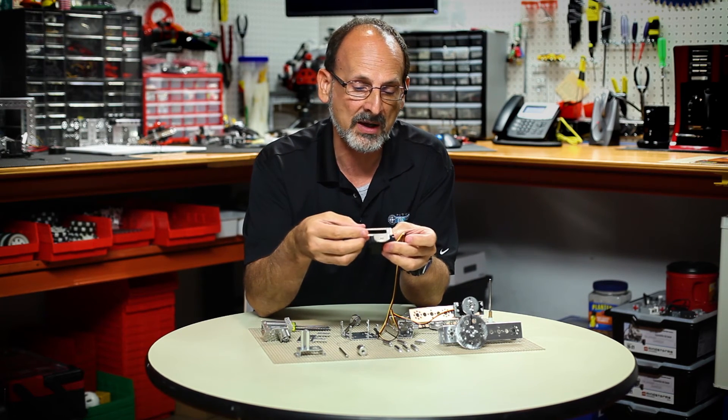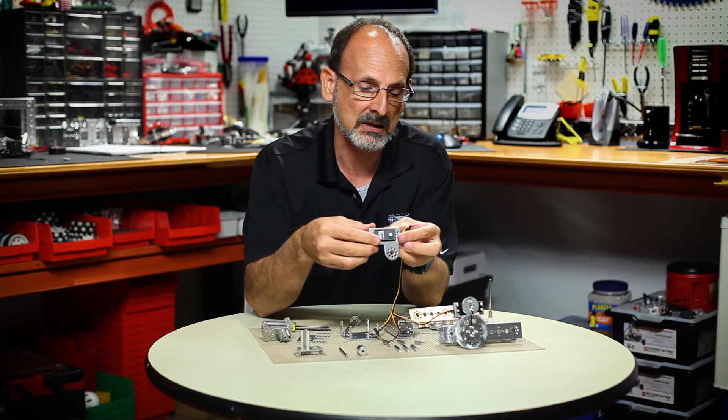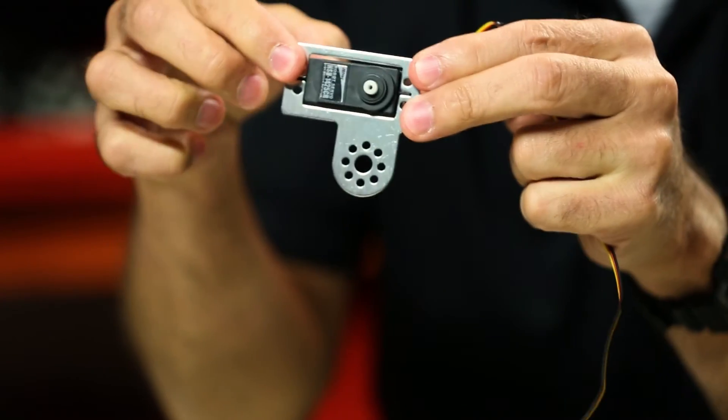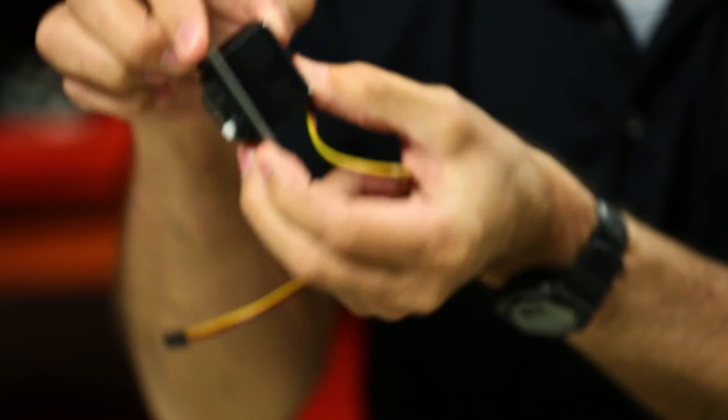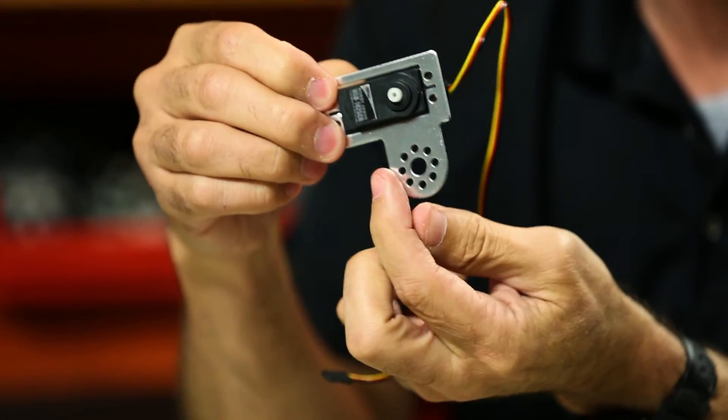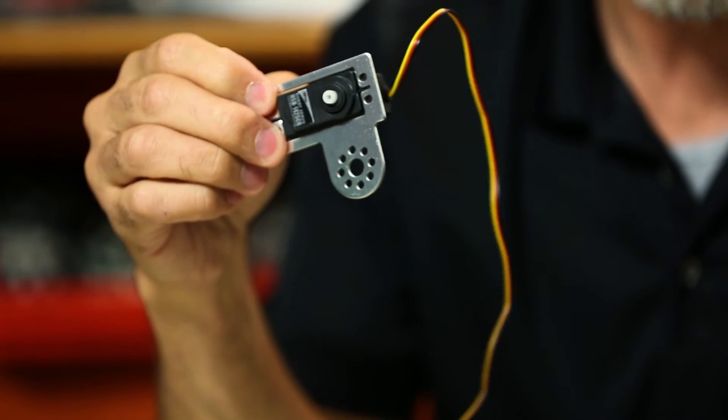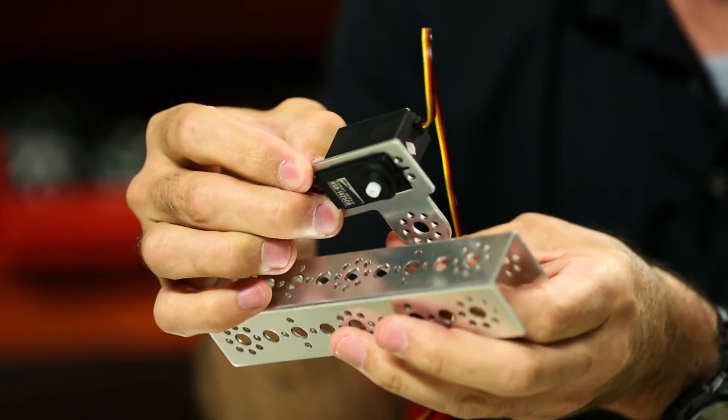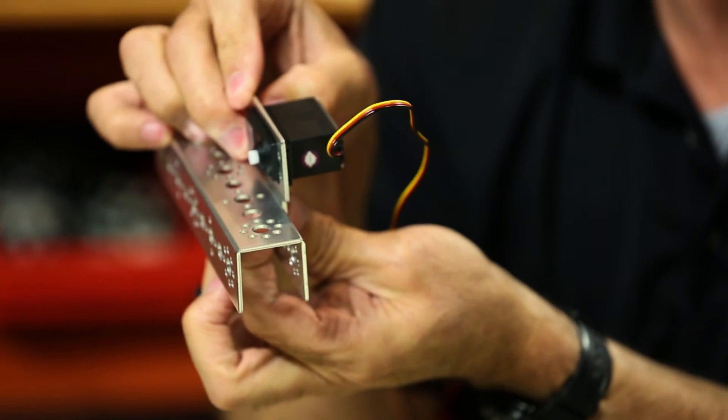And the last piece of bracket that I want to show you is the newest one that we have. We actually have this mounted in a kit, but this one is similar to the front mount in that the servo mounts just like this and we have the Tetrix hole pattern that matches up and allows us to mount either directly to a channel like this.